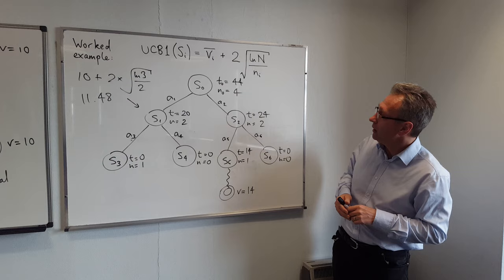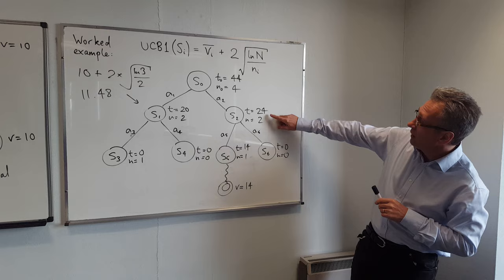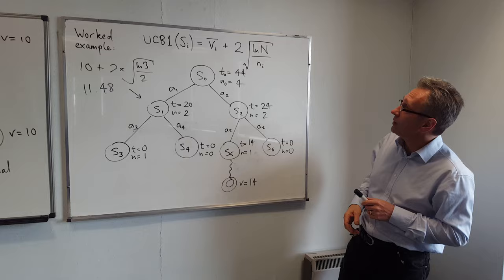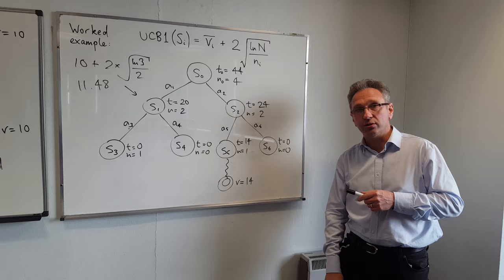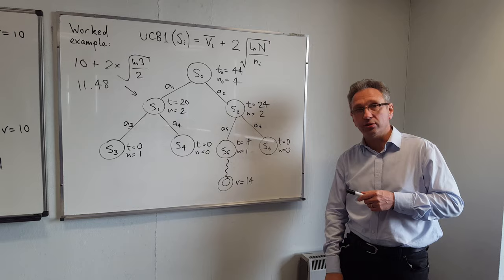If asked to stop at this point, the algorithm would say A2 is the better action to take because it has a higher average value. The overall job of the algorithm is to run for as long as it is allowed to and then return which it thinks is the better action — here it thinks A2 is better because it returns a better reward. In the assignment, you'll continue this search to see if A2 is still the preferred action after another couple of iterations.